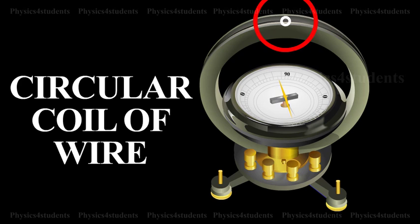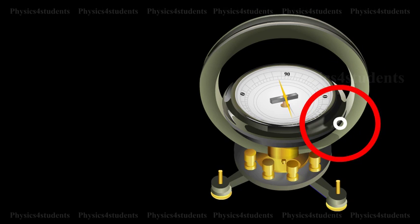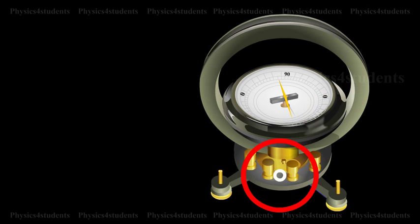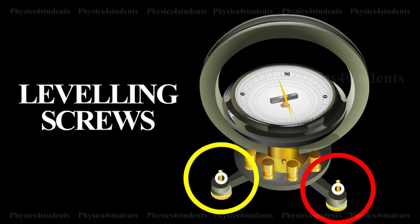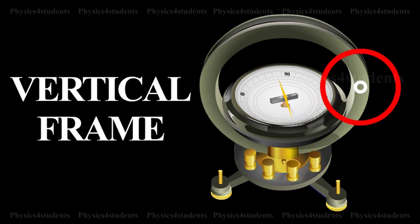Construction. It consists of a circular coil of wire wound over a non-magnetic frame of brass or wood. The vertical frame is mounted on a horizontal circular turntable provided with three leveling screws. The vertical frame can be rotated about its vertical diameter.